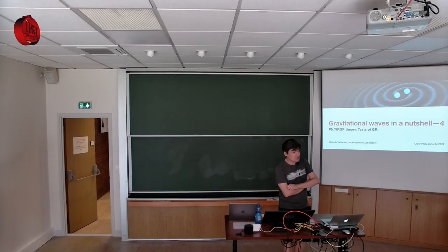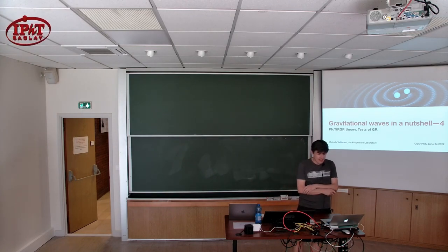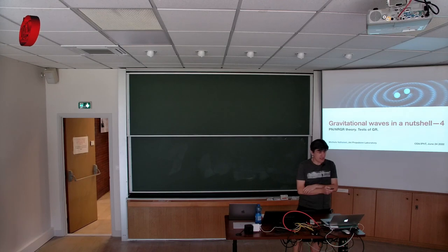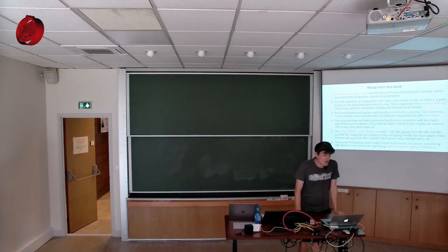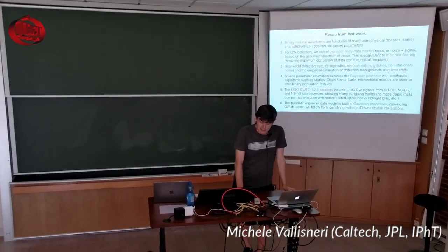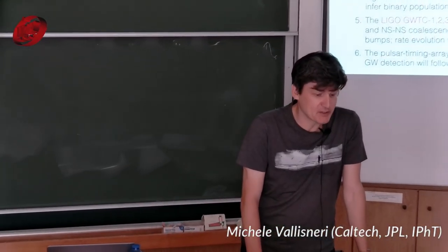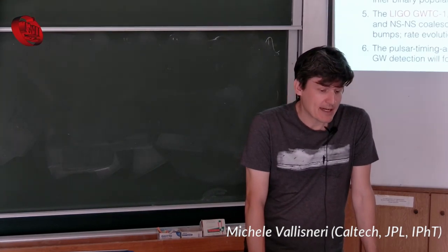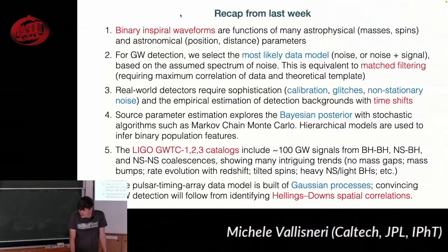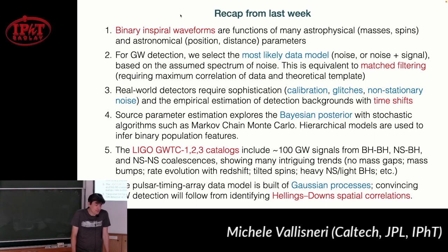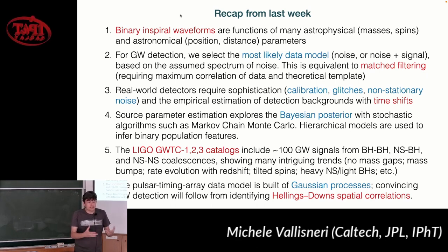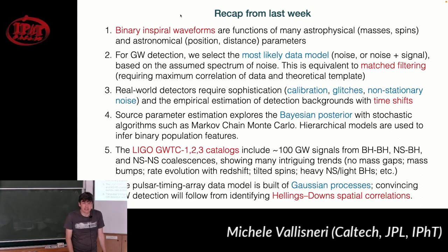Welcome to episode 4 of 'Gravitational Waves in a Nutshell.' We start, as on Netflix, with a recap of the last episode — the cliffhangers I left there. We look at the physical and information content of binary waveforms; we saw that they depend on 15 parameters. Some are astrophysical — the masses and spins of the black holes — and the rest are configuration parameters describing the relative position of the source with respect to the detector, the orientation of the source, and some initial phase and initial time.